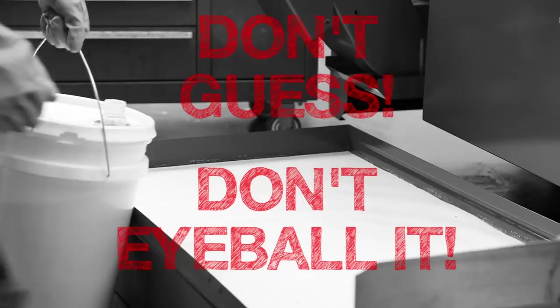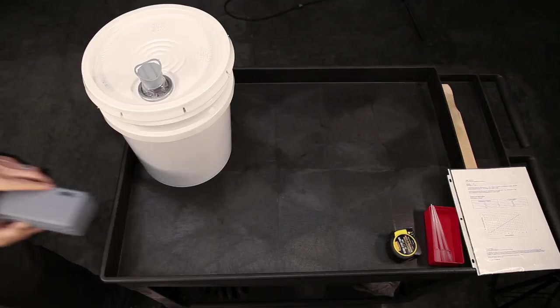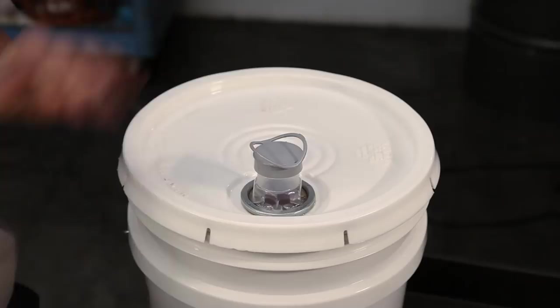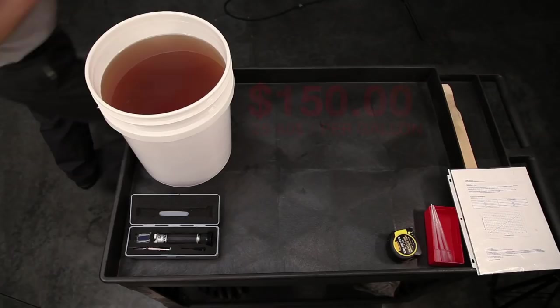We're using a manual model here, but digital versions are also available. Think about this. For less money than this 5-gallon pail of concentrate, you can purchase this tool and never have to guess about your concentration again.